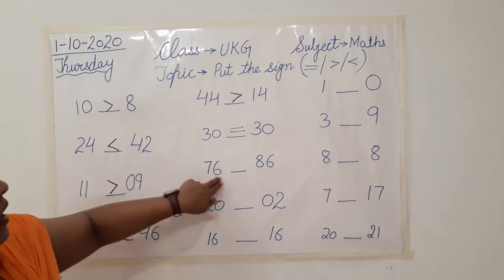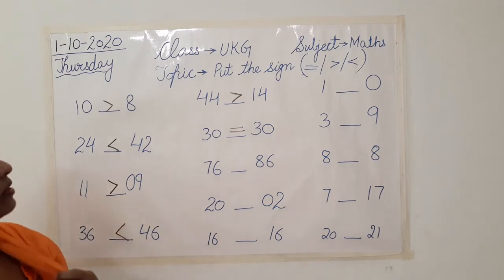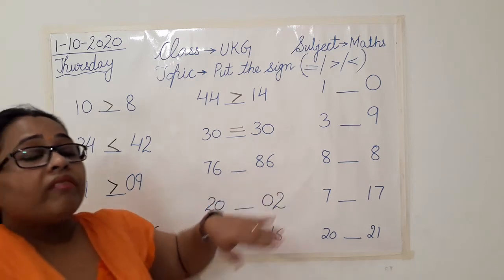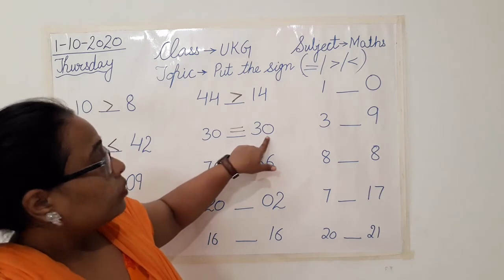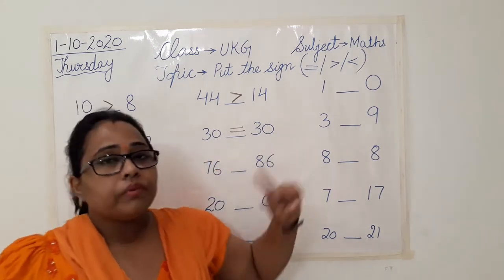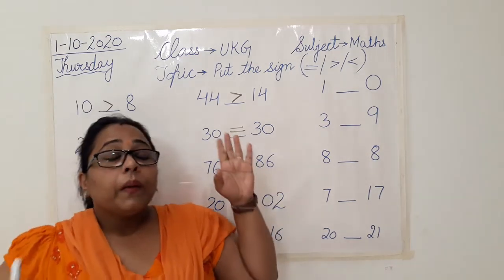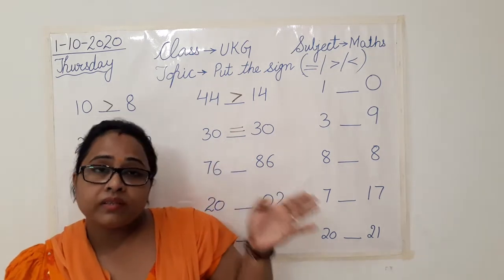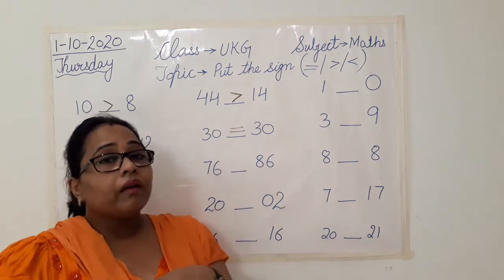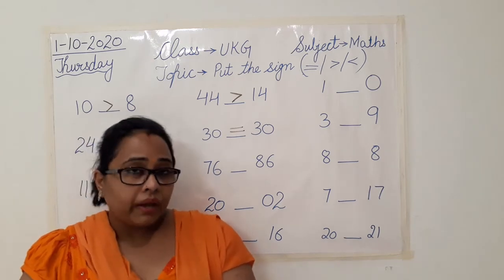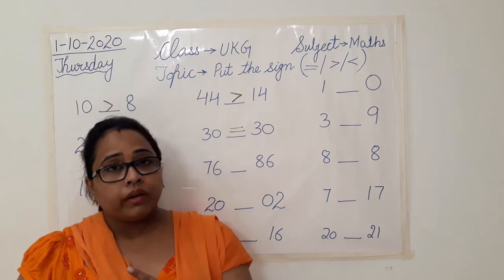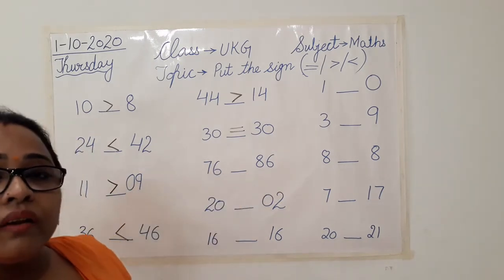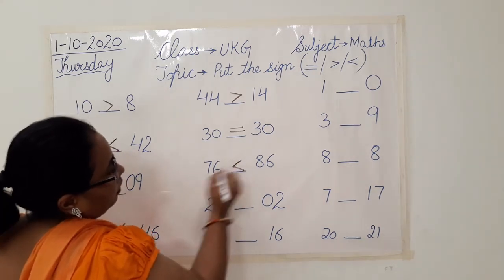Next we have seventy-six and eighty-six. Compare the two given numbers and tell me which is the greater one — seventy-six or eighty-six? Just keep the bigger number in mind. Eighty-six is greater. So again we put the mouth open towards eighty-six. When the same number is written, use the equal to sign. But if the numbers are not same, just see which is greater and put the sign with the open mouth towards the greater number.